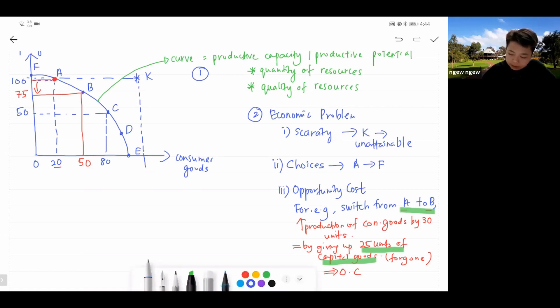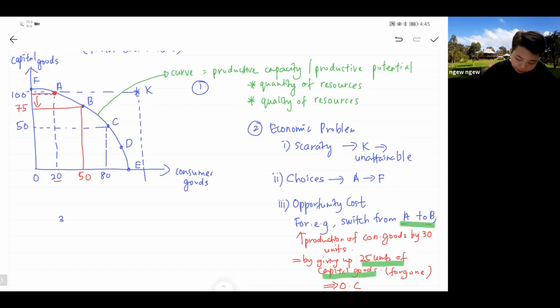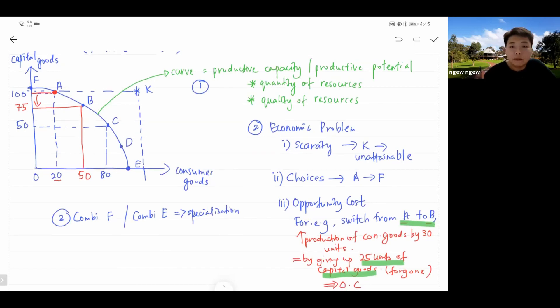Moving on. Let's look at the third point that we need to understand from this PPC. You need to understand combination F or combination E. When you are producing on one axis, this situation we call it specialization. Specialization meaning that firms or country focus or concentrate on the production of one thing. Therefore, if you look at combination F, combo F, you are producing only capital goods.